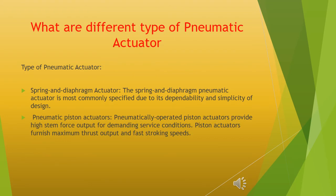What are the different types of pneumatic actuators? Types of pneumatic actuators: Spring and diaphragm actuator — the spring and diaphragm pneumatic actuator is the most commonly specified due to its dependability and simplicity of design. Pneumatic piston actuators — pneumatically operated piston actuators provide high stem force output for demanding service conditions; piston actuators furnish maximum thrust output and fast stroking speeds.